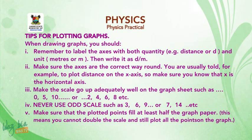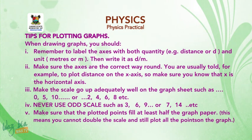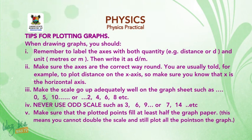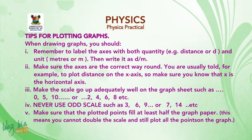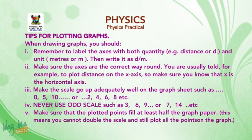Tips for plotting graphs: When drawing graphs, you should: 1. Remember to label the axes with both quantity and unit — e.g. distance or 'd' and unit meter or 'm', written as 'd/m'. 2. Make sure the axes are the correct way around — you are usually told, for example, to plot distance on the x-axis, so make sure you know that x is the horizontal axis. 3. Make the scale adequately well on the graph sheet, such as 0, 5, 10 or 2, 4, 6, 8, and so on.